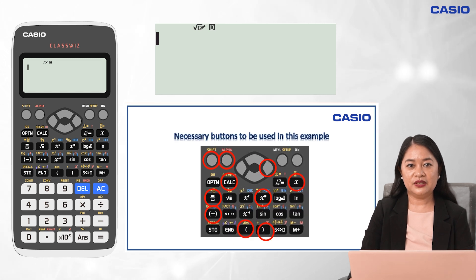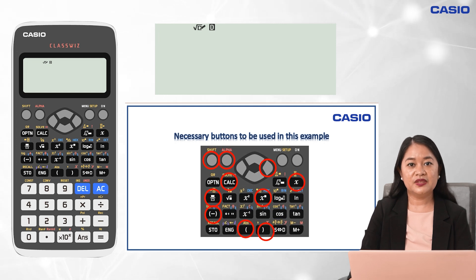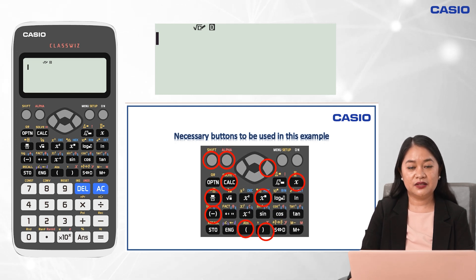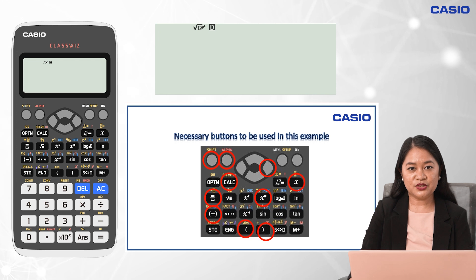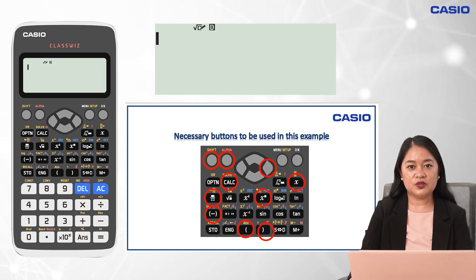Take note that the basic buttons to be used in solving for the periodic payment are the following: Shift, Alpha, Cal, right arrow key, X, fraction key, exponent key, negative sign key, and open and close parentheses keys.